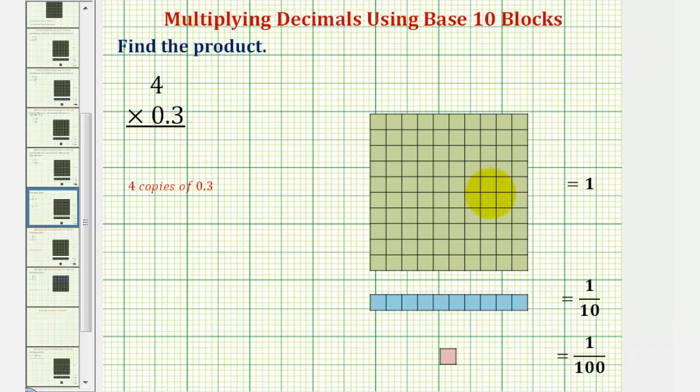We want to find the product using base ten blocks. We have four times three tenths. Because we're working with decimals, we'll define the base ten blocks as follows.